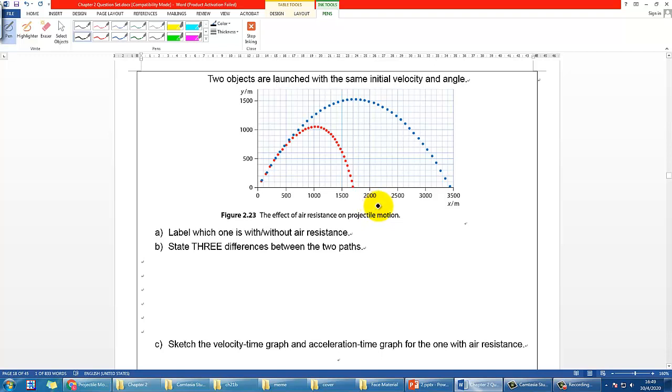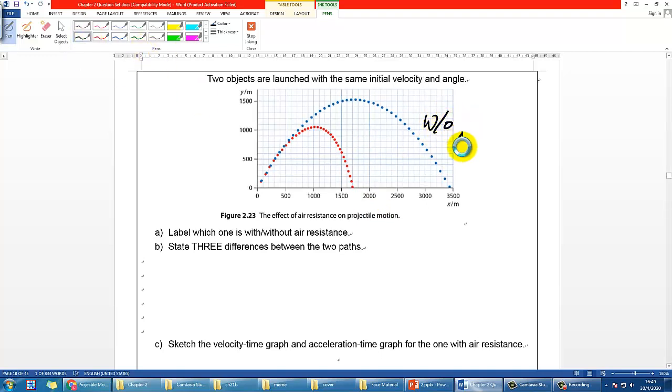So think about it and label it. Apparently this is the one without air resistance while the one red in color is the one that is with air resistance. I mean it is actually quite obvious.